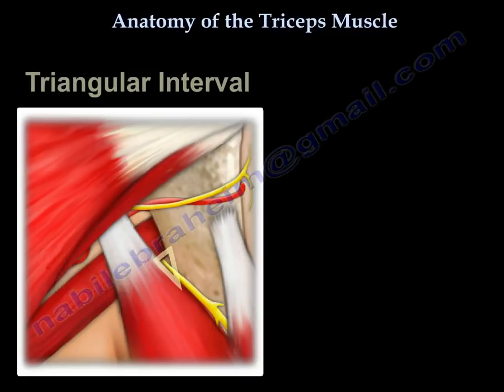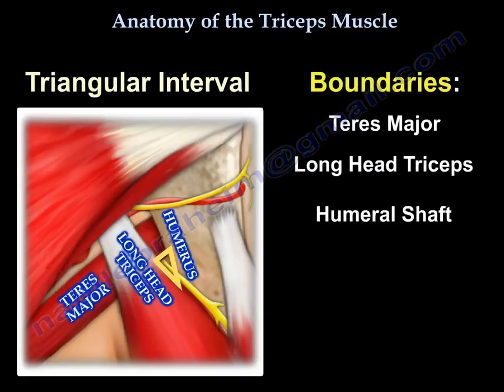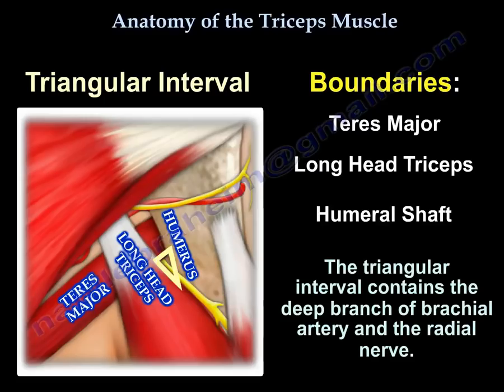Another space is called the triangular interval. Its boundaries are the teres major, the long head of the triceps, and the humeral shaft. It contains the deep branch of the brachial artery and the radial nerve.